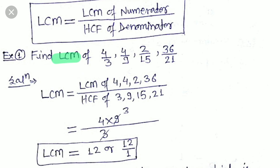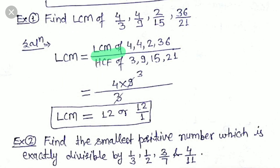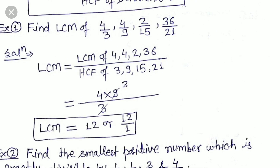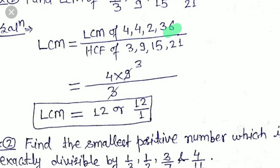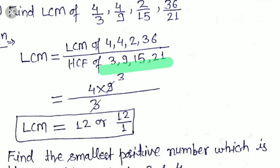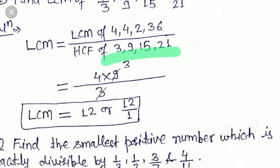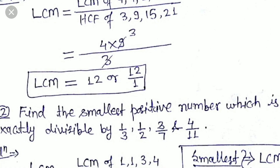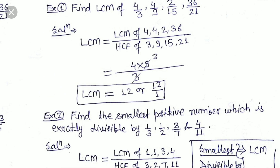For example, for the same fractions 4/3, 4/9, 2/15, and 36/21, LCM equals LCM of numerators 4, 4, 2, and 36. The maximum times 2 appears is twice (in 4 and in 36), so LCM of numerators = 4 × 9 = 36. For the denominator, HCF of 3, 9, 15, and 21 — the largest number dividing all four is 3. So LCM = 36/3 = 12, or written as 12/1.